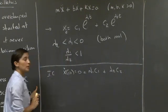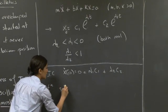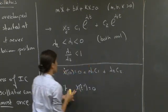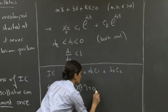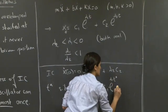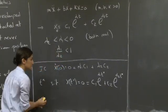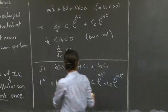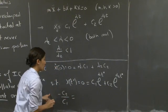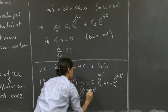Let's start by assuming that the system does cross the equilibrium position. We look for t-star such that x of t-star equals 0. We know the general form: C1 exponential lambda-1 t-star plus C2 exponential lambda-2 t-star equals 0. We can massage this equation to get minus C2 over C1 equals exponential of (lambda-1 minus lambda-2) times t-star.